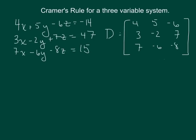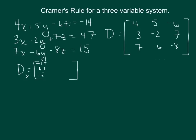We will also have a D sub x matrix. The x values in this matrix are replaced with what the equation equals — those values right here. The y and z values stay exactly the same. So instead of four, three, seven in our first column, we're now going to have negative 14, 47, and 15. Then we'll still have our five, negative two, negative six, and our negative six, seven, negative eight.